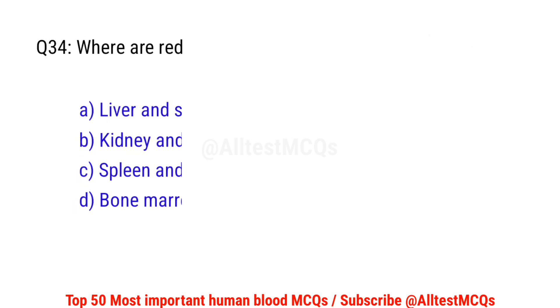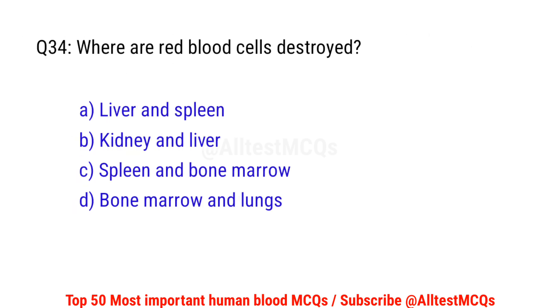Question number 34. Where are red blood cells destroyed? Correct option is A. Liver and spleen.